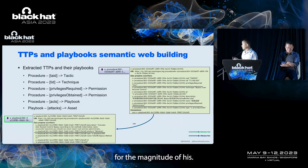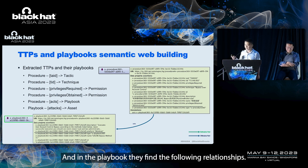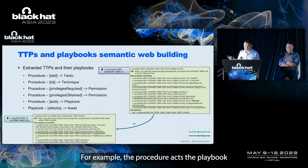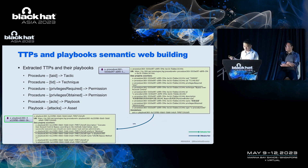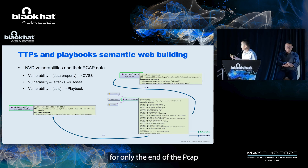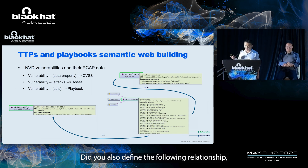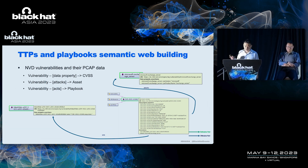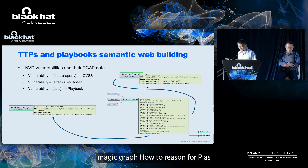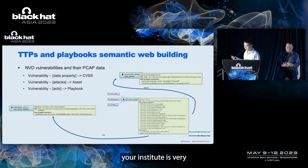For example, the procedure enacts the playbook, and the playbook attacks the asset. For NVD and PCAP data, we also define relationships such as vulnerability attacks a playbook. Now we have constructed the TTP knowledge graph. To reason for BAS, we introduce the reasoning engine.